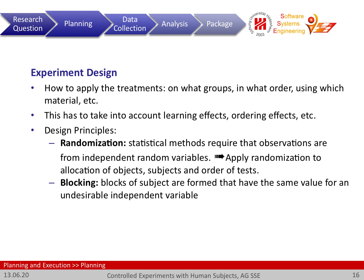What we then do is so-called blocking. We create blocks of subjects formed by having the same value for some undesirable independent variable — in this case, experience. It's undesirable in the sense that it may complicate our overall study. We then assign people randomly from each block to the different treatments, so the distribution of this variable will be the same for all treatments.